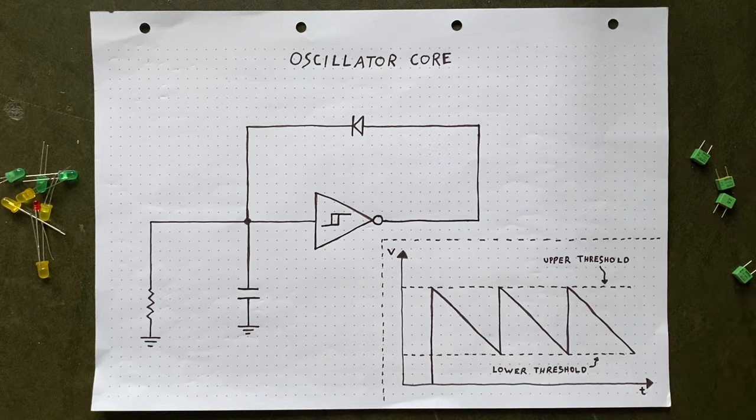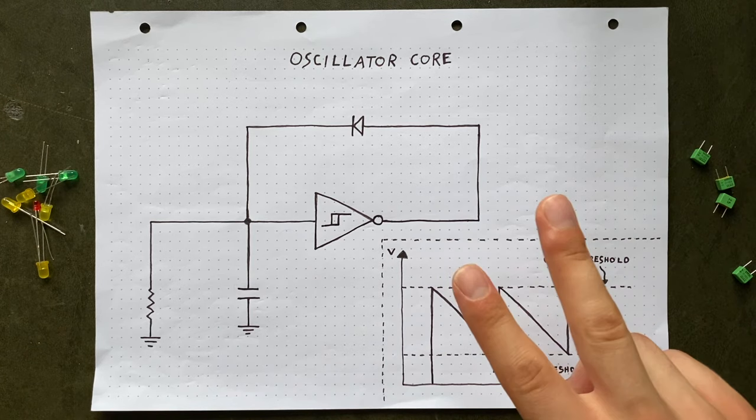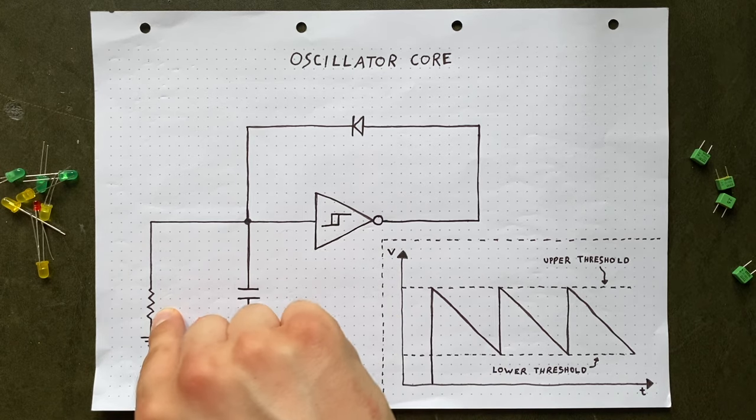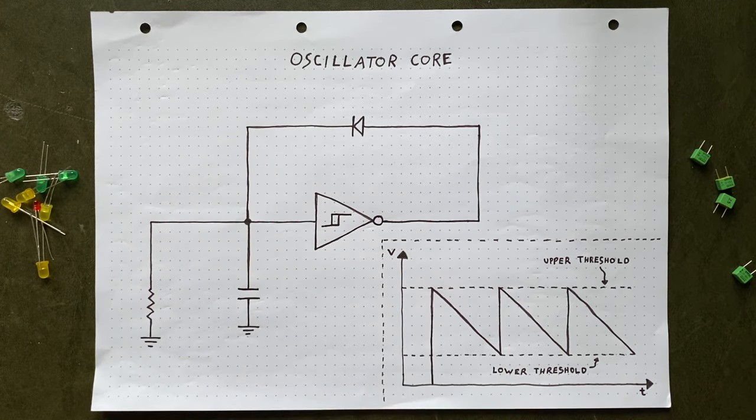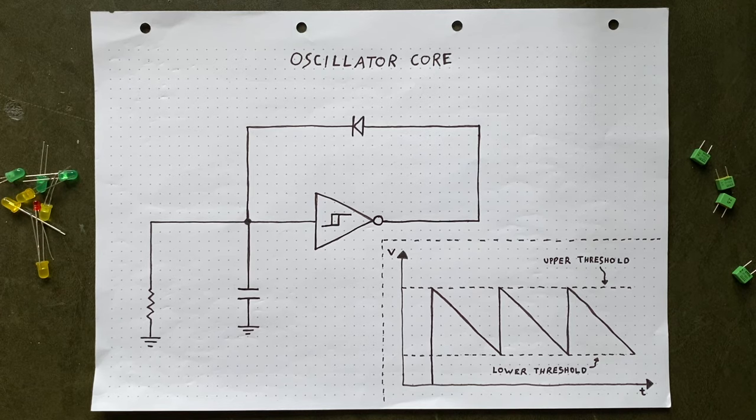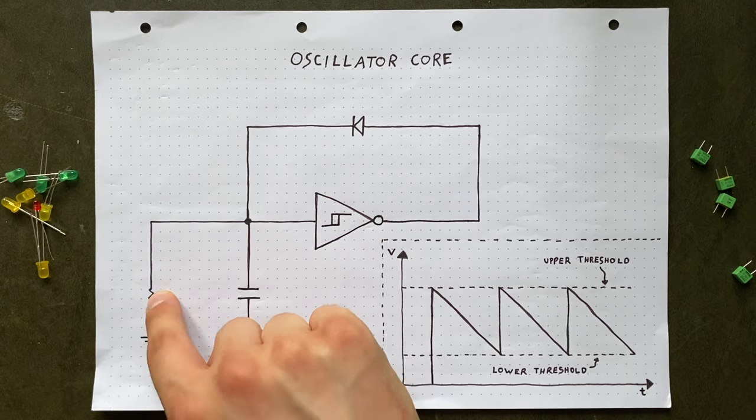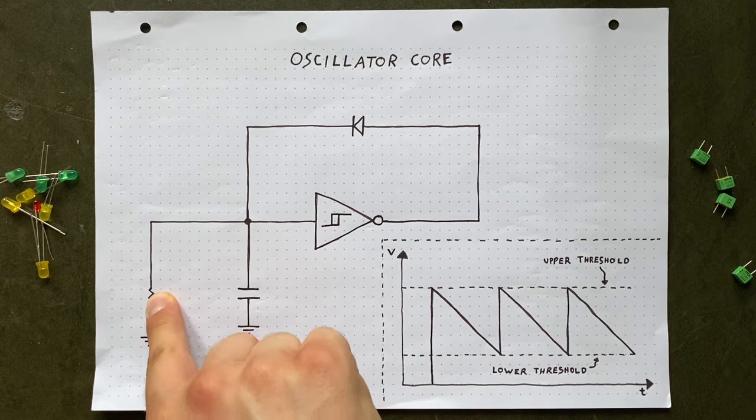The speed of that discharging process is determined by exactly two factors: the capacitor's size and the resistor's resistance value. The bigger the balloon, the more water it can store, and the longer it takes to release the water. The tighter this pipe, the more it restricts the water flow.